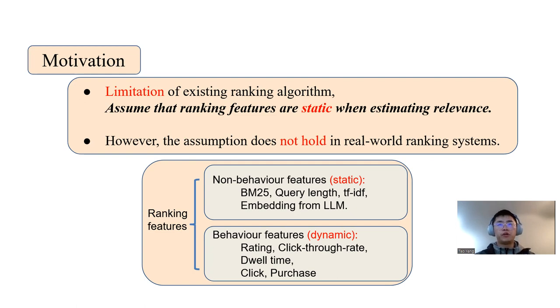For example, we can group ranking features into two groups. The first group is non-behavior features which are usually static, like BM25, query length, TF-IDF, or embeddings from language models. However, there exists another group of features which are dynamic, like ratings, click-through-rate, dwell time, clicks, and purchases.